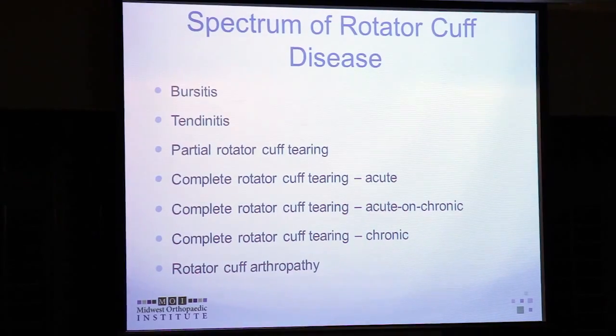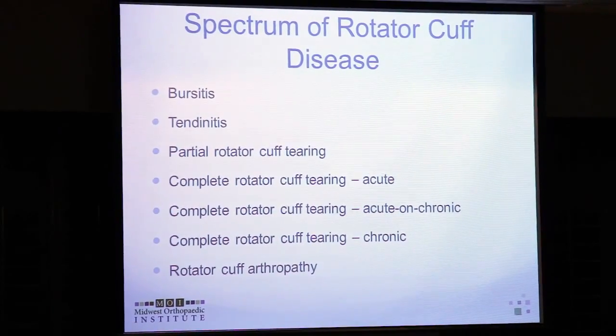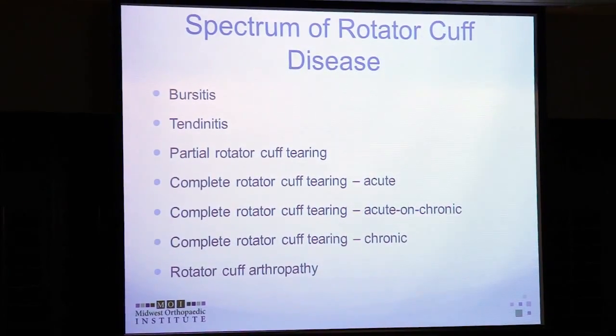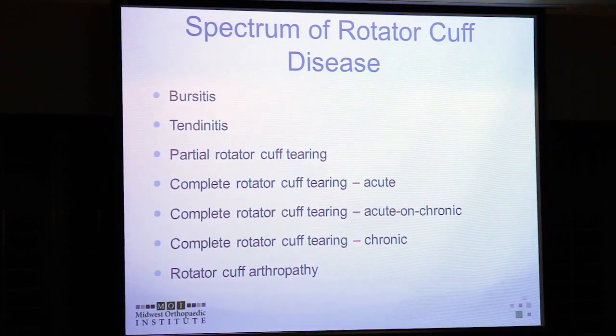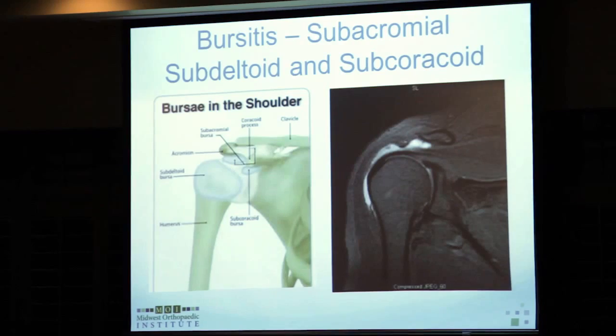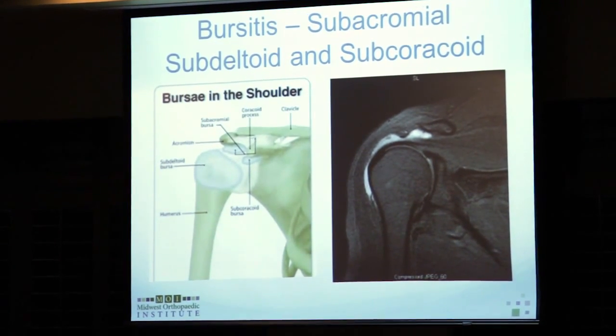Causes of shoulder pain include bursitis, tendon problems like tendonitis or partial tears, rotator cuff tears — including acute, acute-on-chronic, and chronic tears — and finally the end stage: rotator cuff arthropathy, where there are fixed bony changes around the shoulder resulting from chronic tearing.